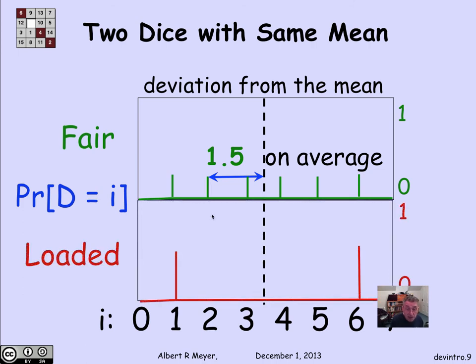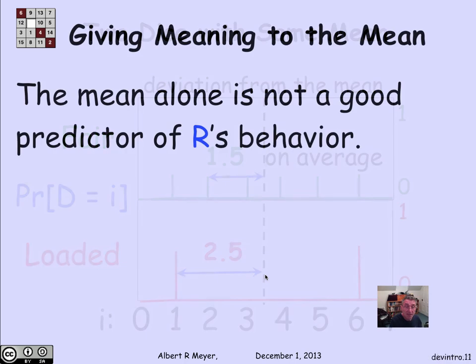On the other hand, for the loaded die, as we said, it's always exactly 2 and 1 half from its expected value, which means its expected value is also 2 and 1 half. So we can start to see the difference between these two distributions and these two kinds of die by, even though they have the same expectation, one of them is more likely and has a greater expected distance from its mean.